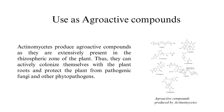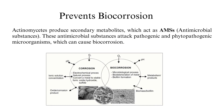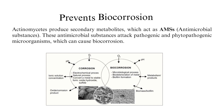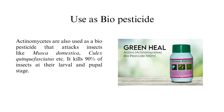Use as agroactive compounds: actinomycetes produce agroactive compounds as they are extensively present in the rhizospheric zone of the plant. They actively colonize plant roots and protect the plant from pathogenic fungi and other phytopathogens. Prevents biocorrosion: actinomycetes produce secondary metabolites which act as antimicrobial substances, attacking pathogenic and phytopathogenic microorganisms that can cause biocorrosion.